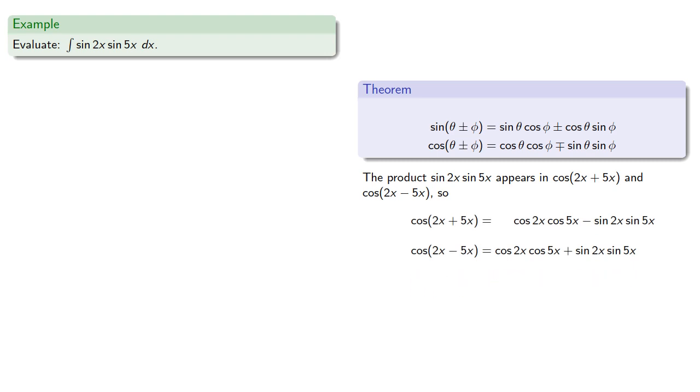Now, this time, to eliminate the term we don't want, we'll need to subtract the cos(2x + 5x) or multiply the first equation by negative 1 and add the two.